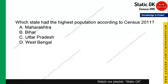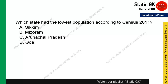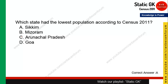Question 5: Which state has the highest population according to Census 2011? The answer is Uttar Pradesh — it is a large state and analogously has the highest population. Question 6: Which state has the lowest population according to Census 2011? All the options are small states, but Sikkim is the smallest among them, so Sikkim has the lowest population.